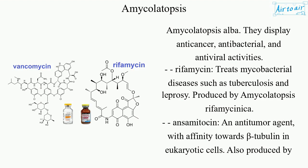Rifamycin treats mycobacterial diseases such as tuberculosis and leprosy, and is produced by Amycolatopsis rifamycinica.